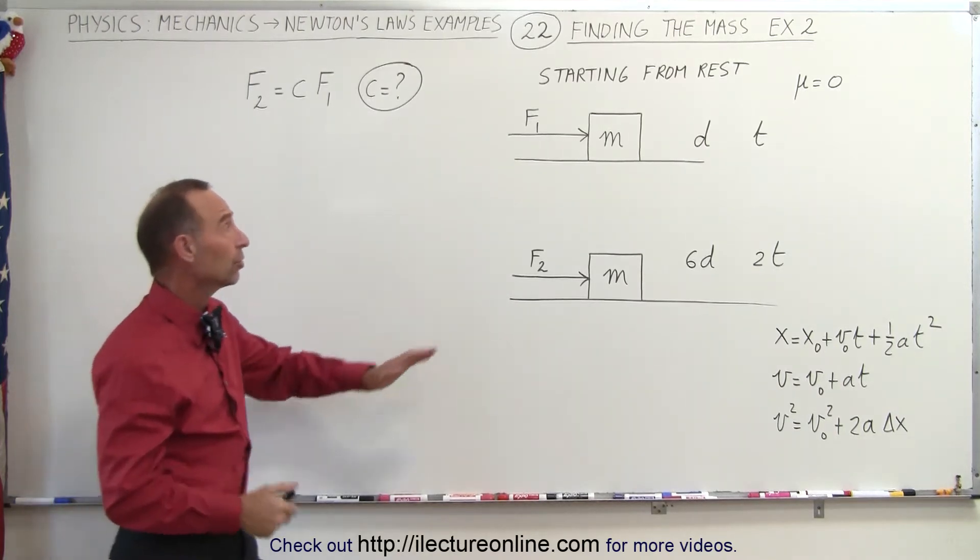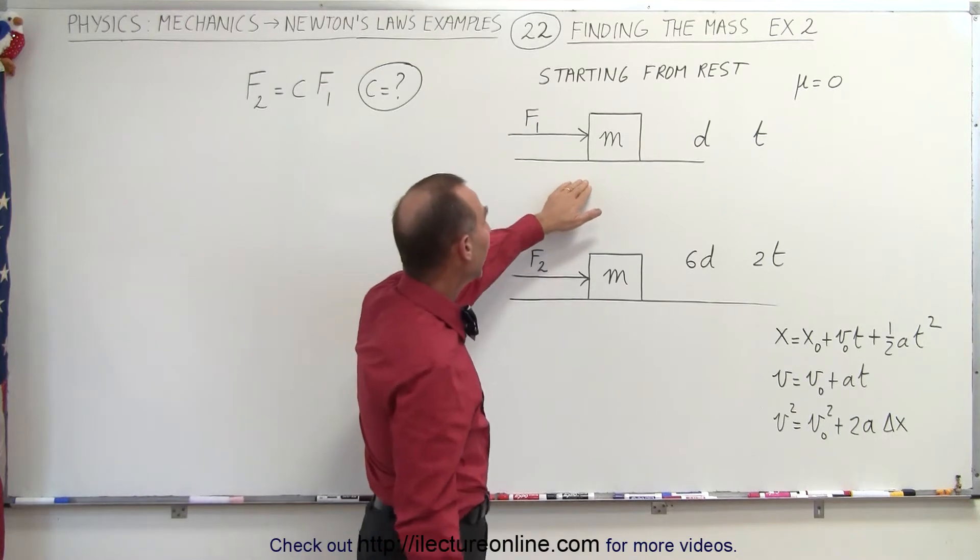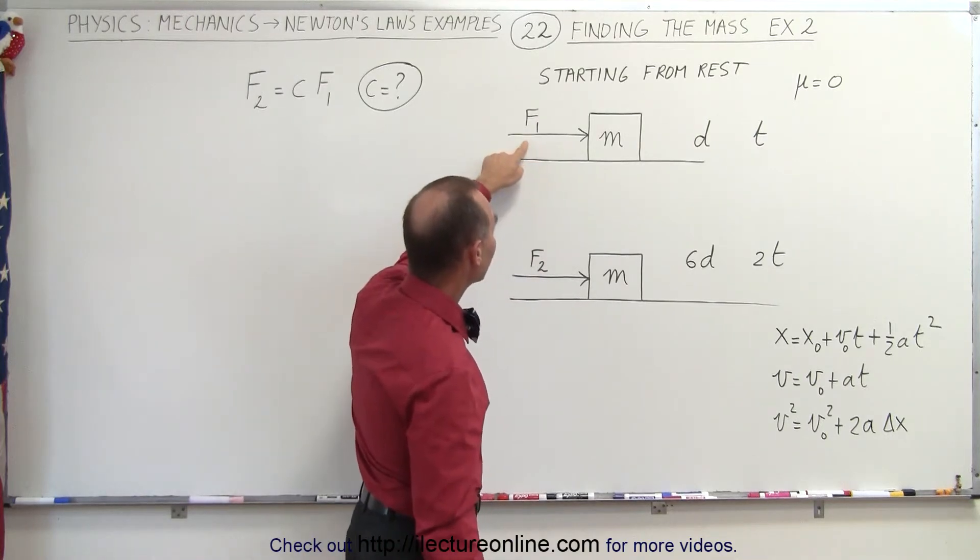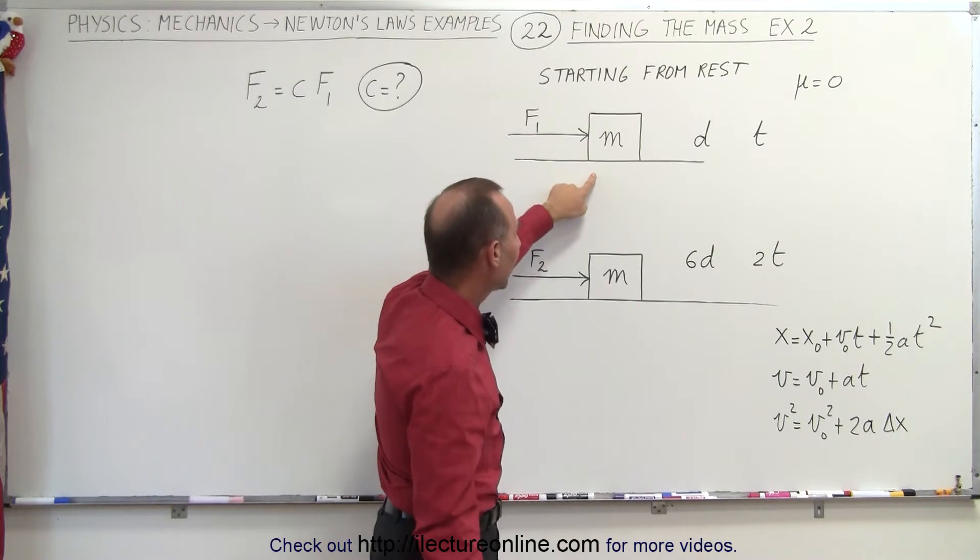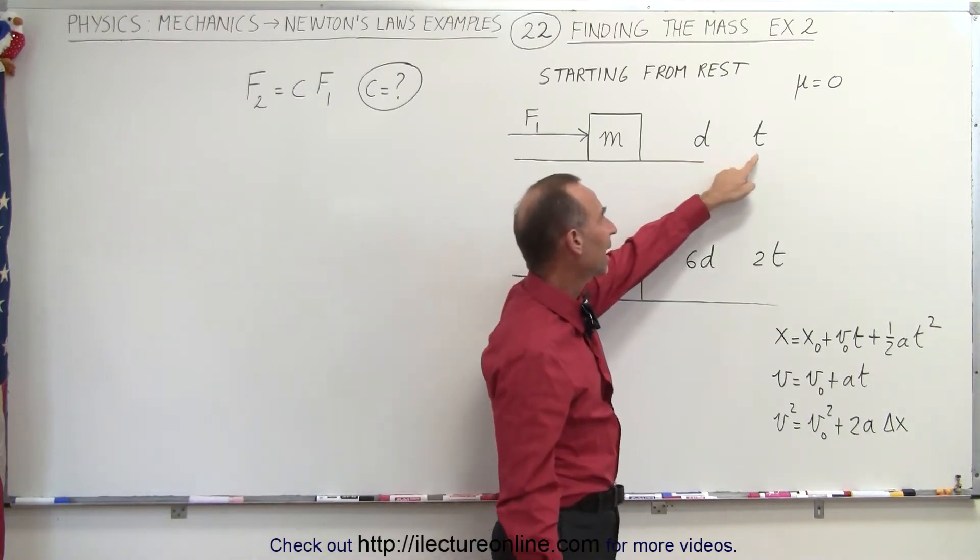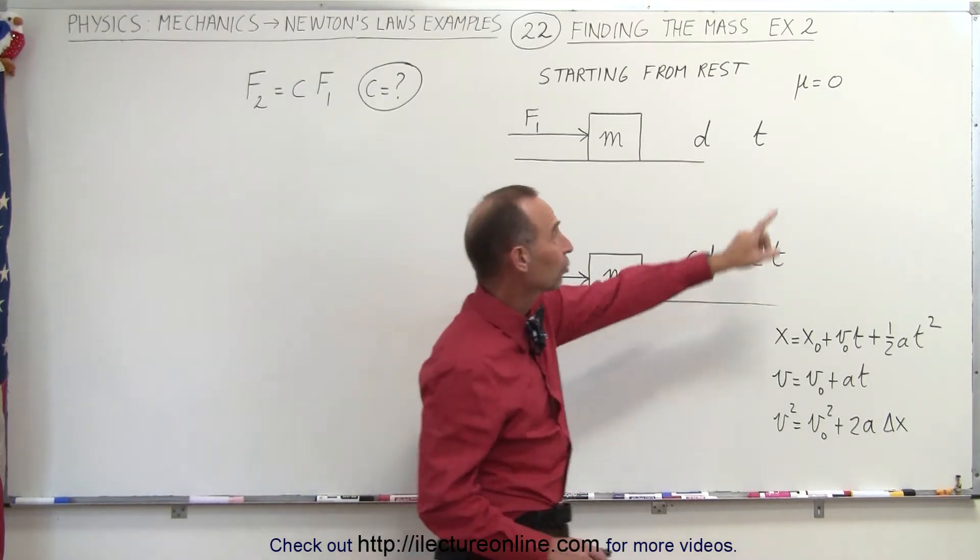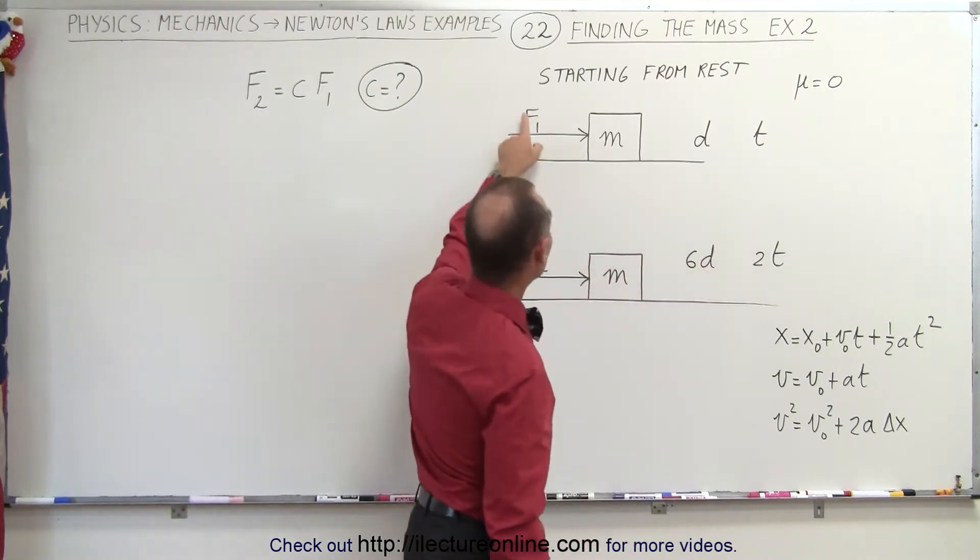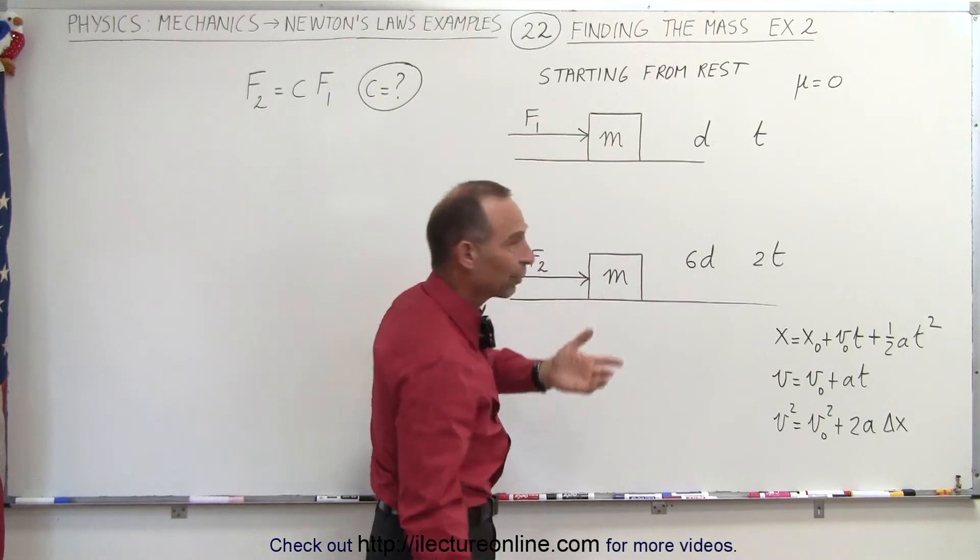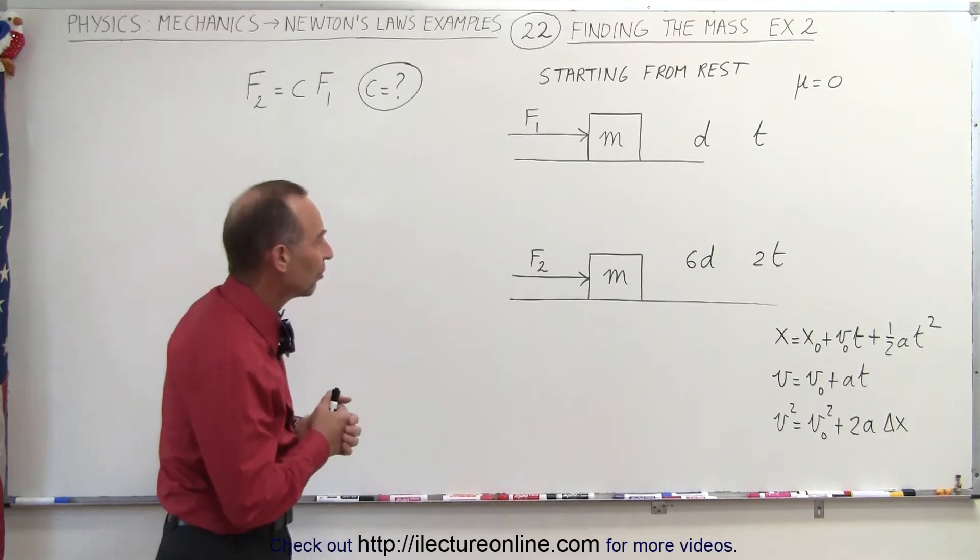Again we have an object with unknown mass m, and here we have the first time we have a force f1 acting on the object and it covers the distance d in time t. We assume that there's no friction and that the object starts at rest, so therefore the initial position and the initial velocity is zero.